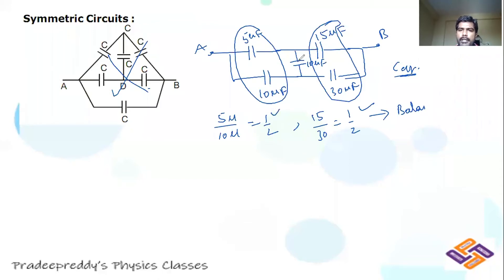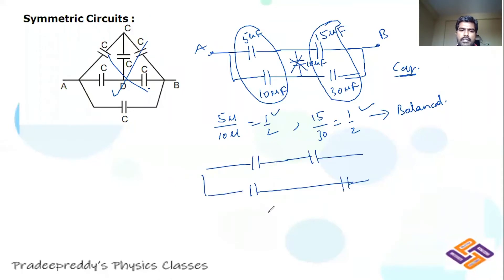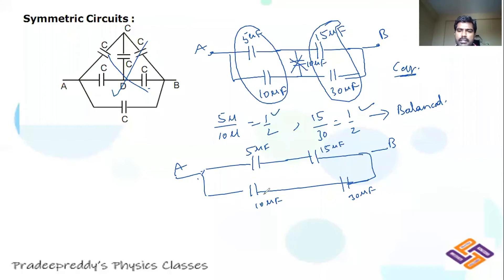As the bridge is balanced, simply eliminate the middle 10 μF capacitor. The remaining capacitors are: 5 μF and 15 μF in series (one branch), and 10 μF and 30 μF in series (another branch). These two series combinations are connected in parallel between A and B. You can find the effective capacitance of the circuit accordingly.